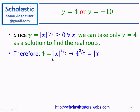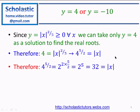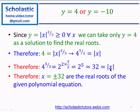So y equal to 4 means modulus x to the power 2 over 5 equal to 4. Raising both sides to the power 5 over 2, we get modulus x equal to 4 to the power 5 over 2. Substituting 4 as 2 squared: 2 squared to the power 5 over 2 equals 2 to the power 5, which equals 32. So the modulus value of x is 32.